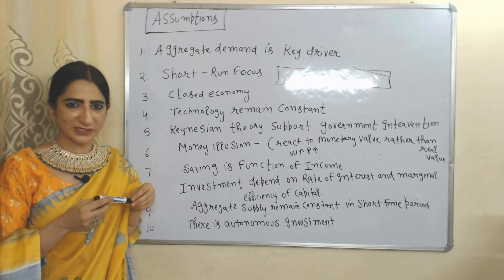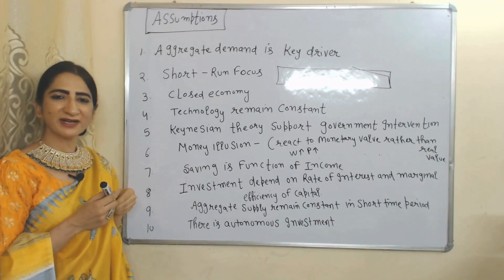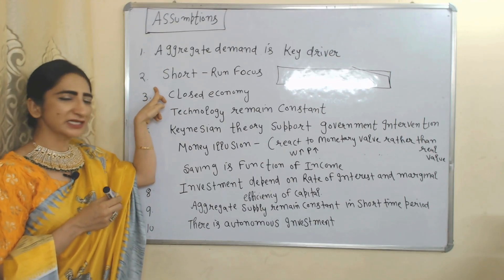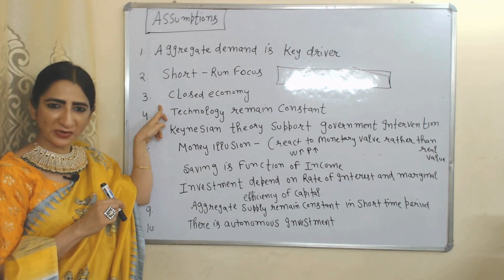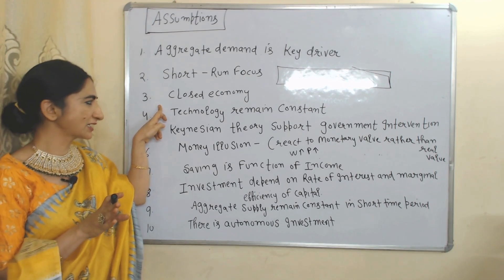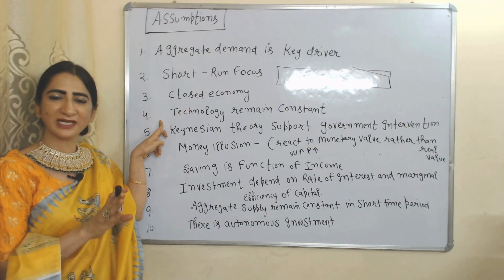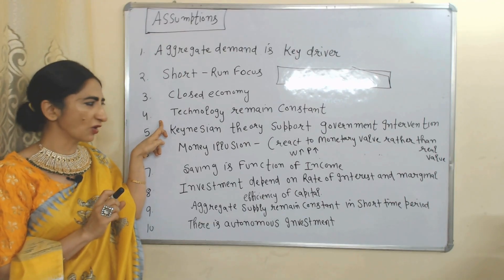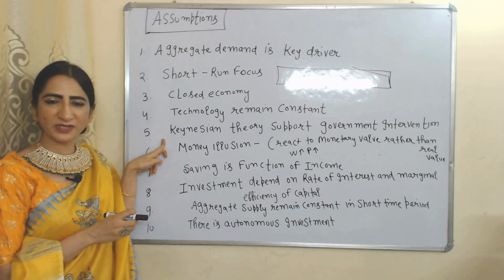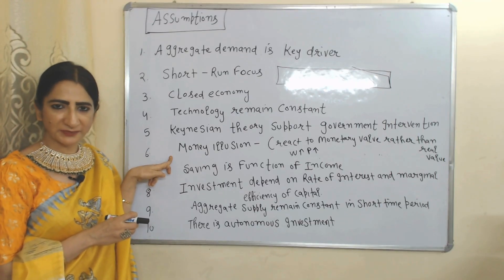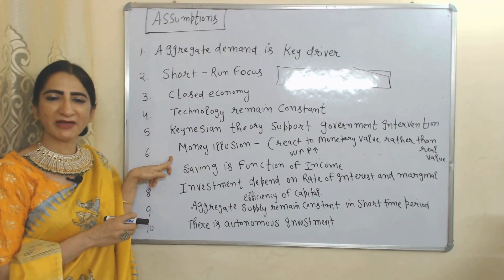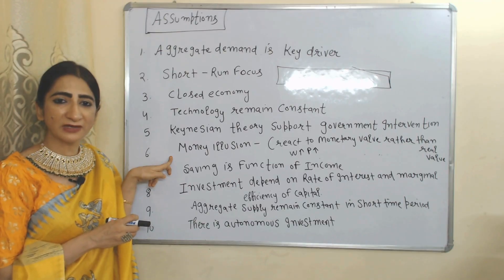Now we will see the assumptions of this theory. Aggregate demand is the key driver. This theory focuses on a short time period. It assumes a close economy — that means no international trade. During the short time period, technology remains constant. This theory supports government intervention. According to Keynes, people have money illusion — they focus on monetary value rather than real value.